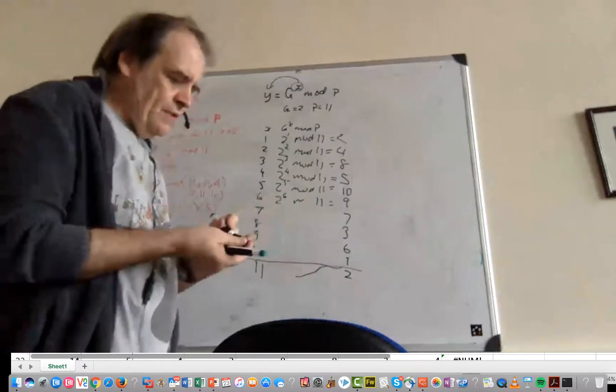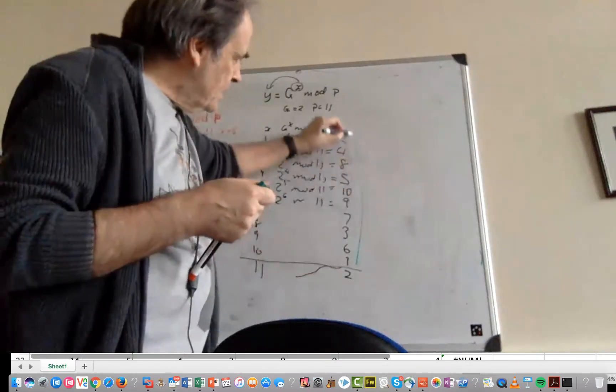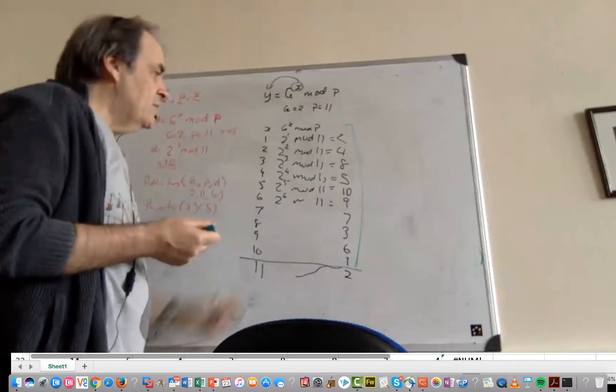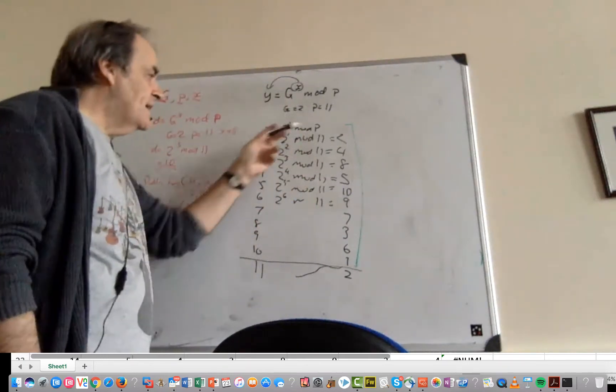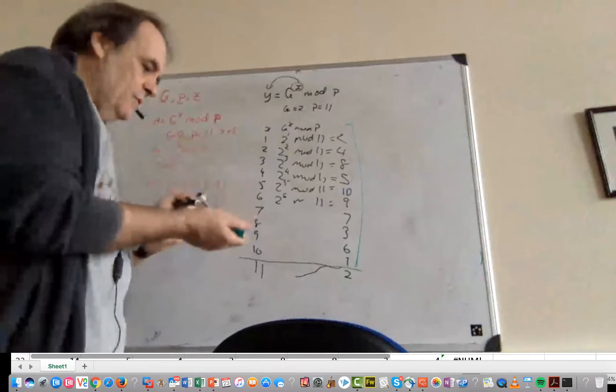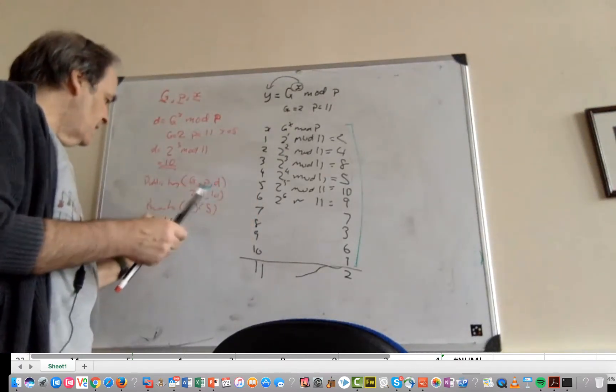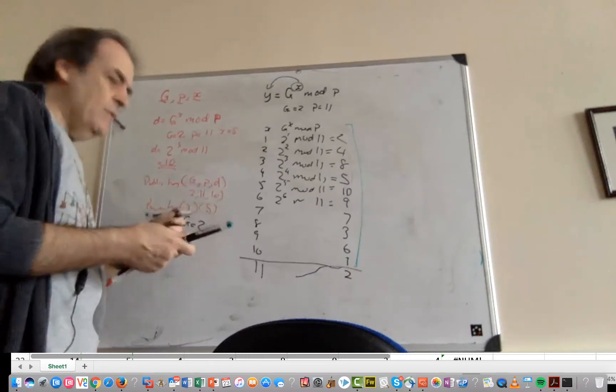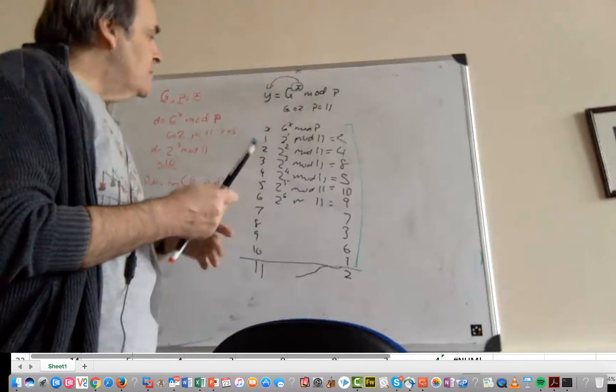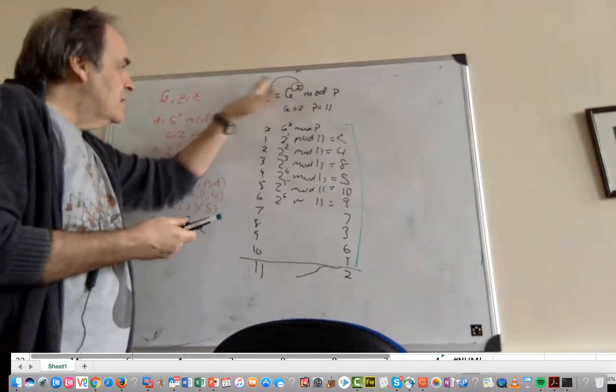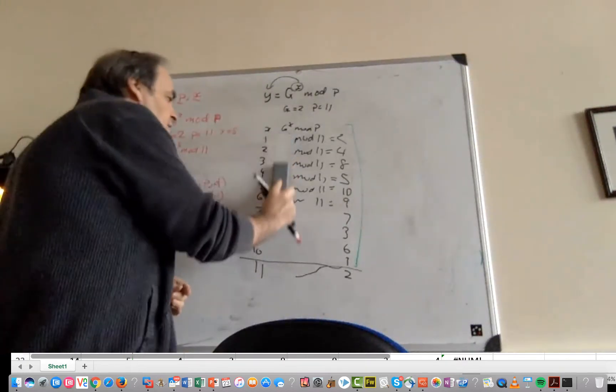What you should notice is that these are all unique values from 1 to P minus 1, or 1 to 10. So for a prime number equal to 11, G can equal 2. This works because every value of X gives us a unique value of Y. Now let's look at G equals 3.